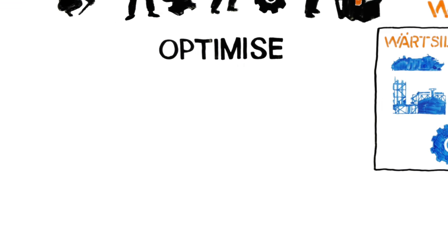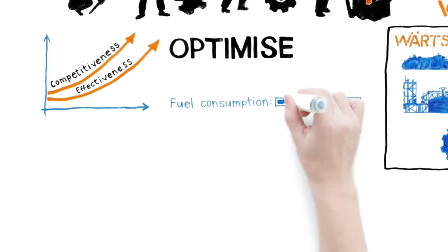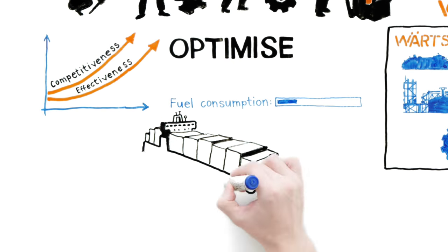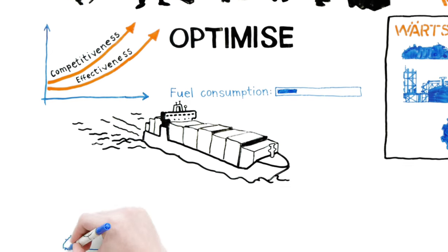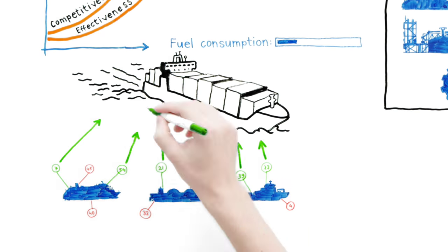Optimize. The goal is to increase competitiveness and effectiveness in your daily operations with real-time optimization. For example, fuel efficiency could be increased by trim optimization or by adjusting engine parameters based on the actual power need. Benchmarking and comparison of operations with industry best practices is also provided.